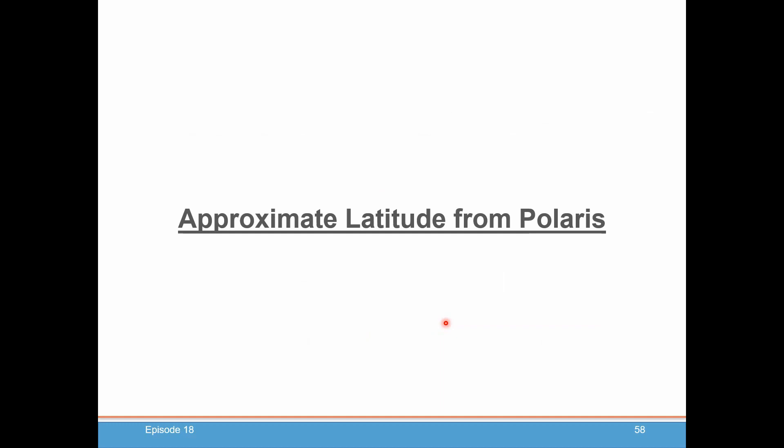We did a pretty good job of getting latitude from a noon sight a few episodes back. But if the sun is not visible — say it's a cloudy day — and in the evening you were able to get a good sight of Polaris, you can use that as an approximate latitude for yourself. We'll see you next time for episode 18.